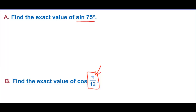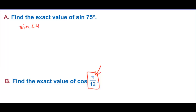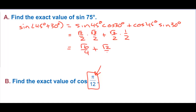Let's do sine of 75 degrees first. There are a few combinations we could use, but 45 plus 30 equals 75 degrees. So we have the sine of 45 degrees plus 30 degrees, which equals sine of 45 degrees times cosine of 30 degrees, plus cosine of 45 degrees times sine of 30 degrees. That gives us square root of 2 over 2 times square root of 3 over 2, plus square root of 2 over 2 times 1 half, which equals square root of 6 over 4 plus square root of 2 over 4, or square root of 6 plus square root of 2, all over 4.